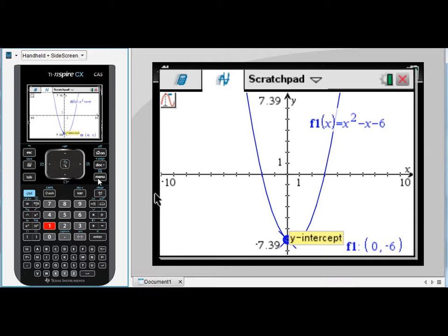The default with Graph Trace is that it will place the cursor on the y-intercept of the graph. Here we can see it's telling me this point is a y-intercept with coordinates 0, negative 6. In Trace mode I'm essentially going to be able to walk along the line of the graph.